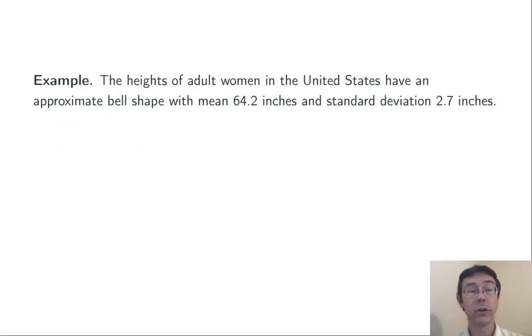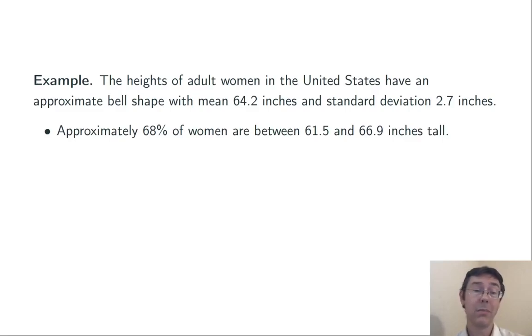Let's conclude with a short example. The heights of adult women in the United States have an approximate bell shape with mean 64.2 inches and standard deviation of 2.7 inches. So, approximately 68% of women are going to have heights within one standard deviation of that mean.